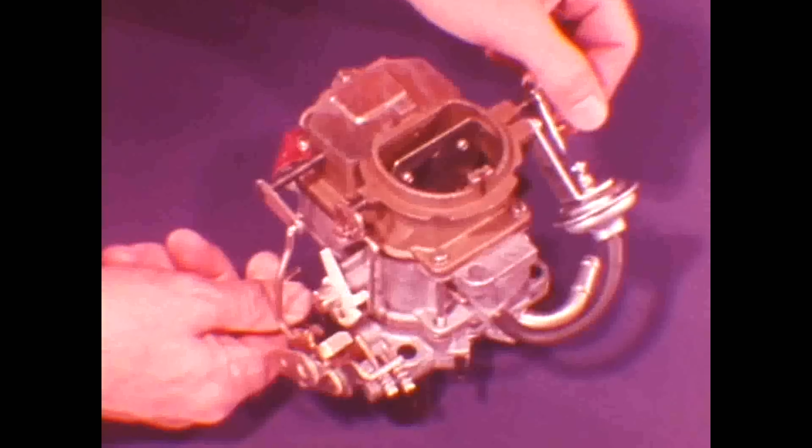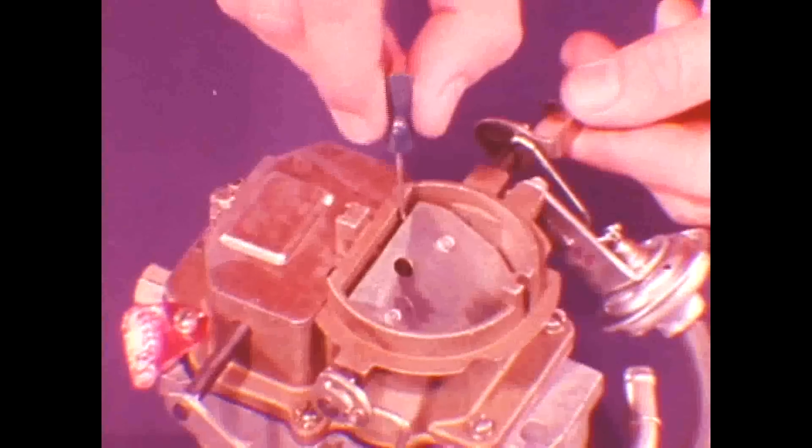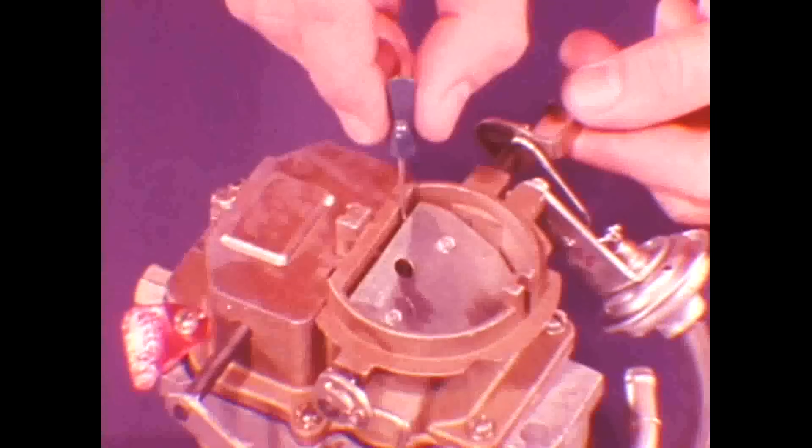First check the fast idle cam position. Here's why: since the choke valve and cam are linked together, we must be certain that at every stage of choke valve opening the cam is repositioned properly to ensure correct engine rpm all during warm-up. To do this, place the fast idle speed screw on the second step of the fast idle cam. With the choke coil rod disconnected, push the choke valve toward the closed position. You should feel a slight drag on the gauge.